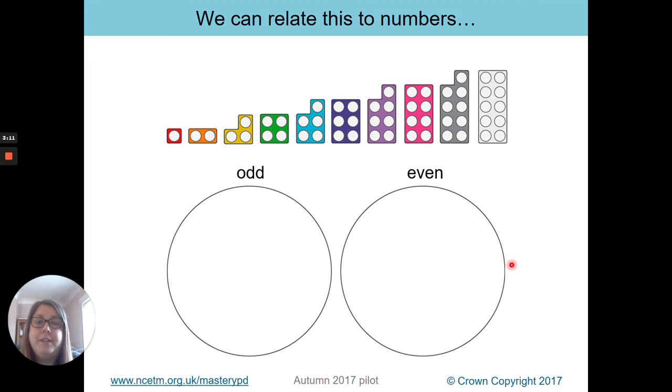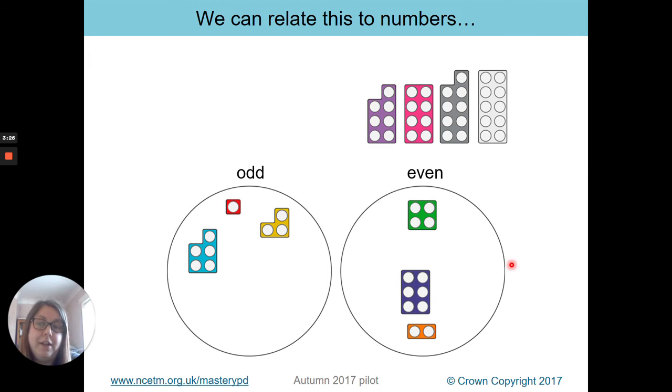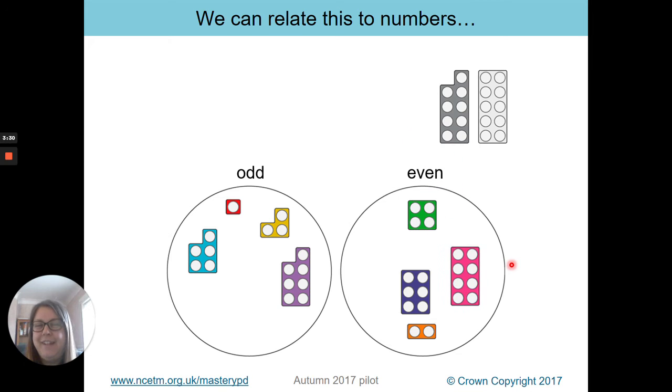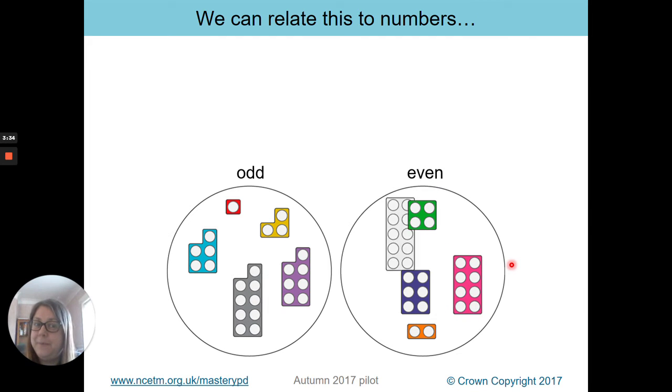So we can relate this to numbers. So we can put one in there. Two is even. Three is odd. Four is even. Where's five going to go? Is it odd or even? It's going to go to odd, isn't it? Because it's got that odd one out. Six is even. Seven is odd. I hope you're saying this. Eight is even. Nine is odd. And ten is even. Well done.